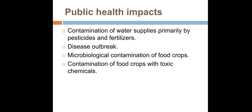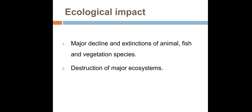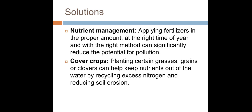Regarding public health impacts, contamination of water supplies primarily by pesticides and fertilizers can lead to disease outbreaks, microbiological contamination of food crops, and contamination of food crops with toxic chemicals. There are also two ecological impacts: first, major decline and extinction of animal, fish, and vegetation species; second, destruction of major ecosystems.